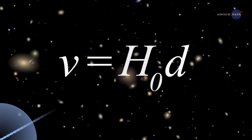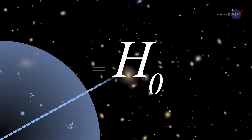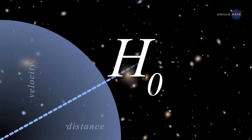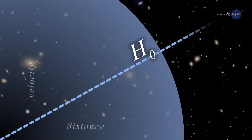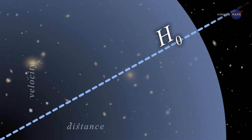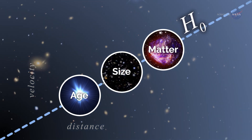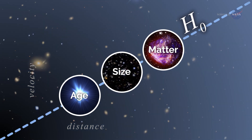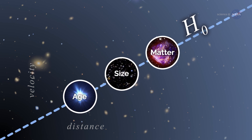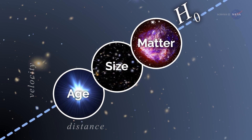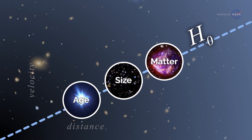In the standard model of cosmology, H-naught is a crucial ingredient, right up there with the speed of light. H-naught factors into everything we know about the universe — how old it is, how big it is, what it's made of. If H-naught is tweaked, we get a different age of the universe, different relative amounts of matter, dark matter, dark energy, and so on.